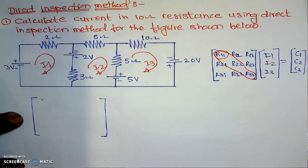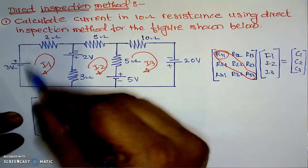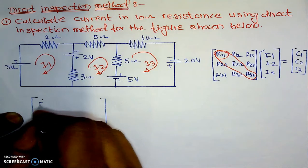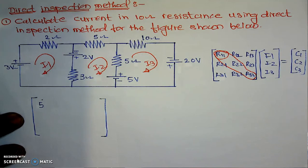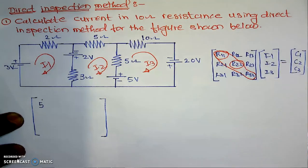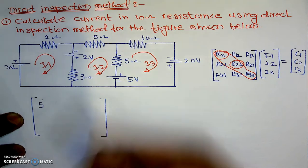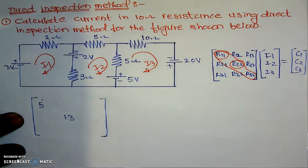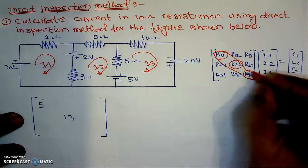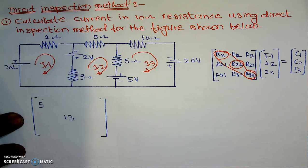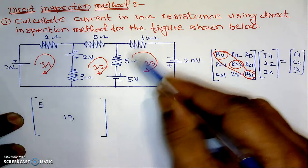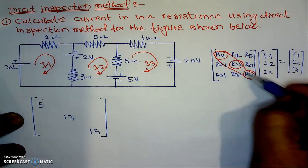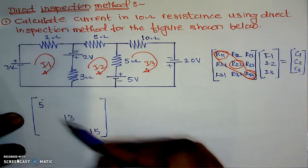Now here is the first loop. This resistance is 2 plus 3, which is 5 — it is a diagonal element, so it should be positive. Then R22, the resistance of the second loop, is 5 plus 5 equals 10, plus 3, which is 13. Then R33, the resistance belonging to the third loop only, is 10 plus 5, which is 15. So the diagonal elements are 5, 13, and 15.